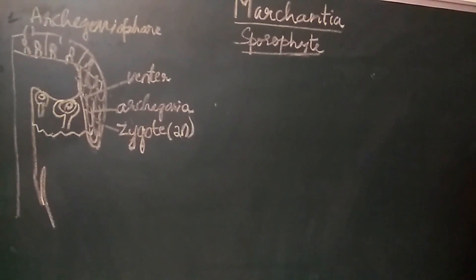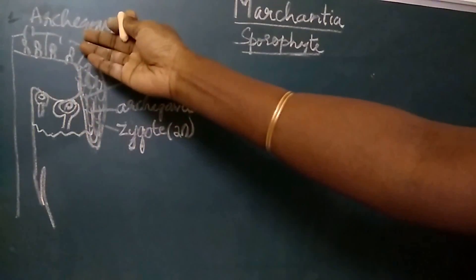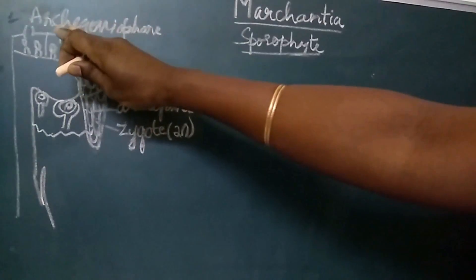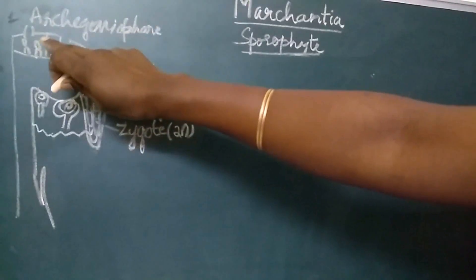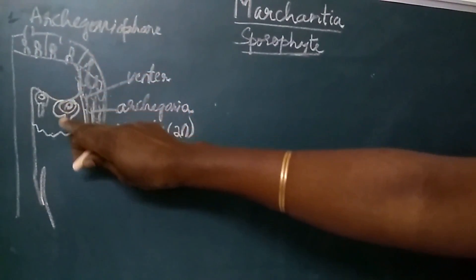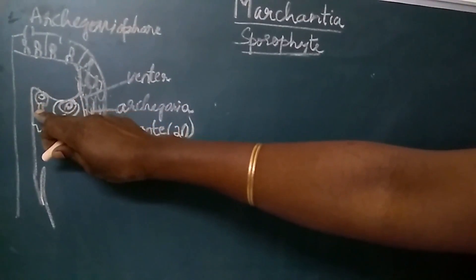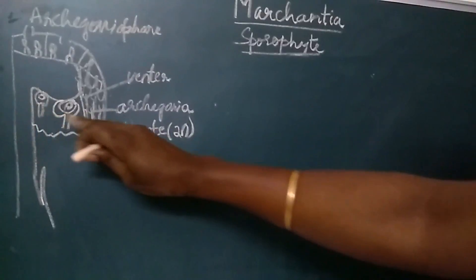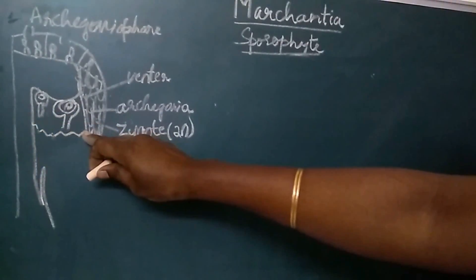Now we will see how the sporophyte of Marchantia develops on the archegoniophore. The archegonia develop on the dorsal surface of the thallus on the archegoniophore, but after fertilization, because of the differential growth in the receptacle cells, the lobes of the archegoniophore get inverted and the archegonia also occupy a different position on the ventral surface. The smaller ones are towards the center and the larger, mature archegonia are towards the periphery, and the set of archegonia is covered by a sterile membranous layer called the perichaetium.